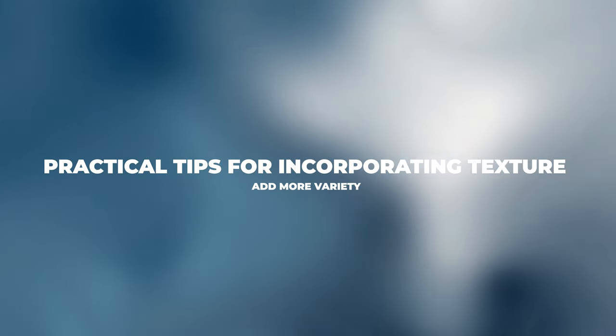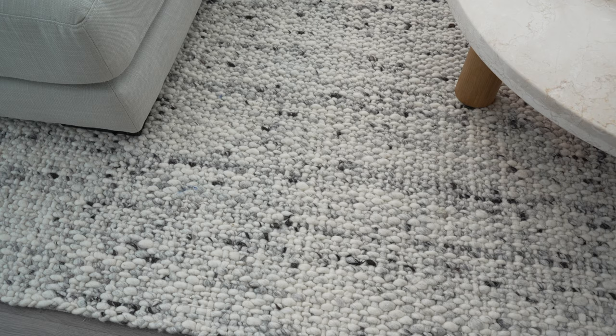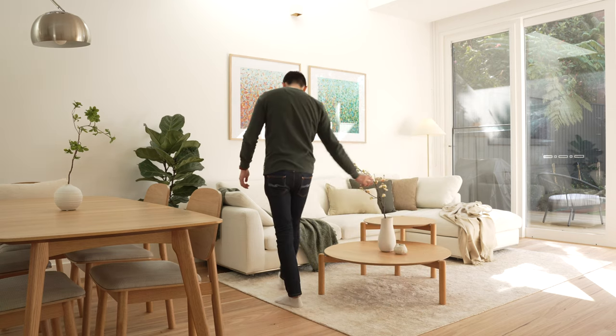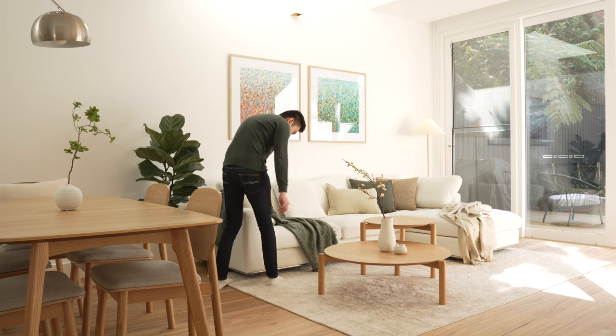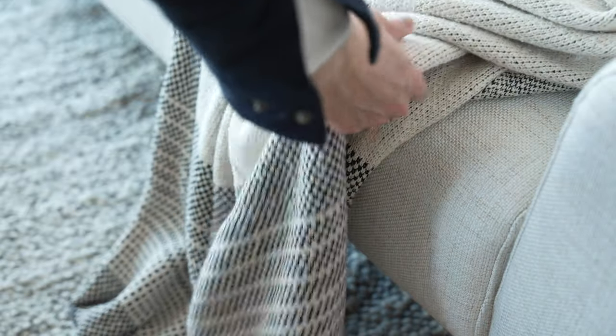Now that you know the significance of texture in design, here are some ways you can incorporate texture into your own space. The main way to achieve textural contrast is through layering. For instance, layer a soft or patterned rug over your hardwood or tile floor, or layer pillows with subtle patterns over your plain sofa, adding different elements like linen upholstery, handmade pottery, or timber with visible grains.